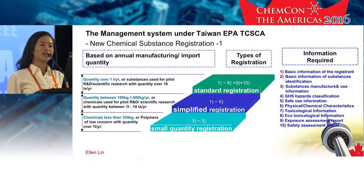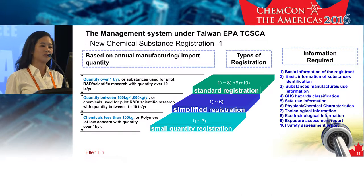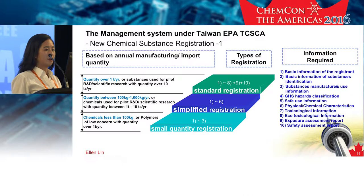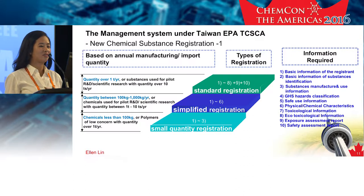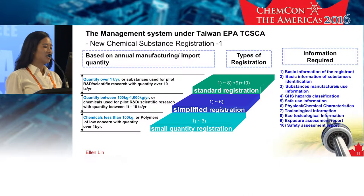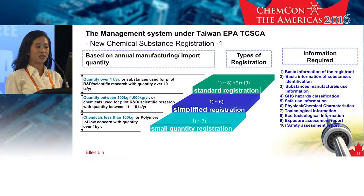There are three types of registration for new substances under TCSC and MOL's OSHA, depending on the uses, properties, and the tonnage of the new substances. We have small-quantity registration, simplified registration, and standard registration.